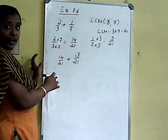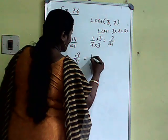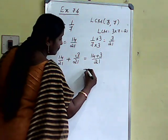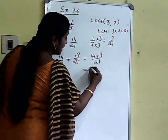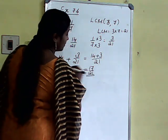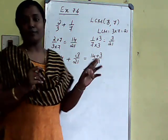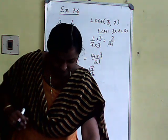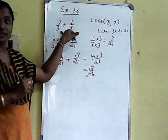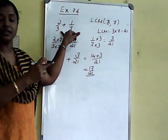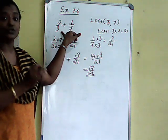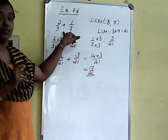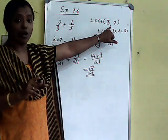1 by 7 multiplied by 3 over 3 gives 3 by 21. So 2 by 3 converted to 14 by 21, plus 1 by 7 converted to 3 by 21. Now it is a like fraction. How to add like fractions? We add only the numerators and keep the denominator the same. We get 14 plus 3 is 17 by 21. So how to add these types of problems: this is an unlike fraction, so first step we convert it into a like fraction by finding the LCM. LCM of 3 and 7.